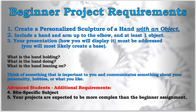The beginner project requirements: create a personalized sculpture with a hand and an object. The hand must include the hand and the arm up to the elbow and at least one object. Your presentation — how you will display it — must be addressed; you will probably be making a base. Think about what is the hand holding, what is the hand doing, what is the hand leaning on. Think of something important to you and communicate something about your personality, your hobbies, and what you like.